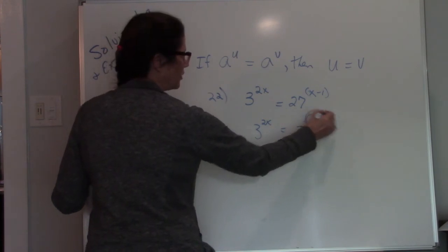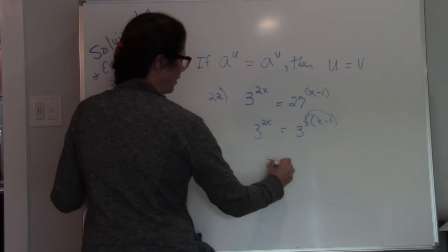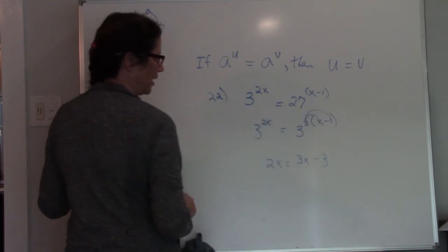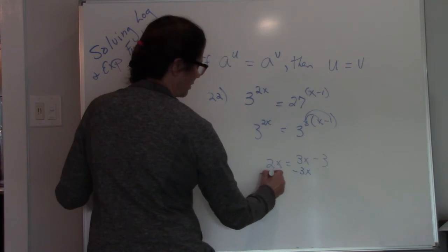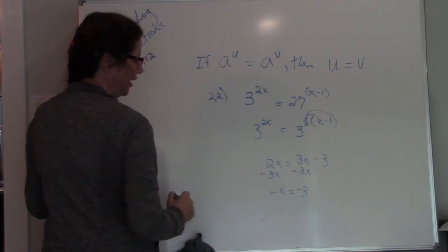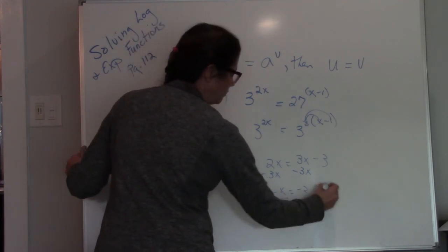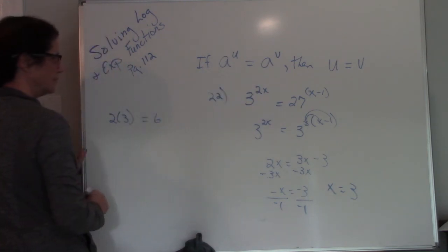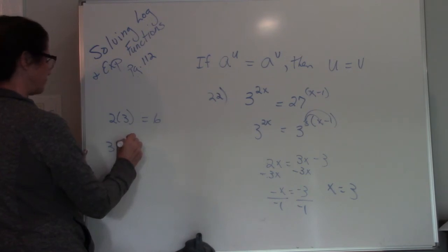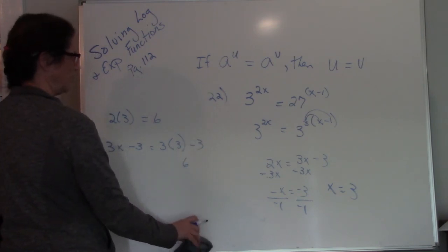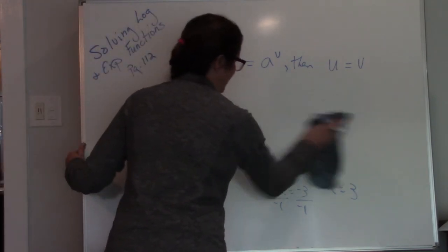What I need to do now is distribute this 3 through the x minus 1. So now 2x equals 3x minus 3. I just distributed 3 times x and 3 times negative 1. Now I have a straight equation, and I can solve for x. So I bring my 3x over as negative 3x. 2x minus 3x is negative x equals negative 3. Divide both sides by negative 1, and I get x equals 3. Plug it back in. 2 times 3 is 6. 3x minus 3 is 3 times 3 minus 3, so 9 minus 3 is also 6. So I know I did it correctly. 3 is the correct answer. All right, next one.